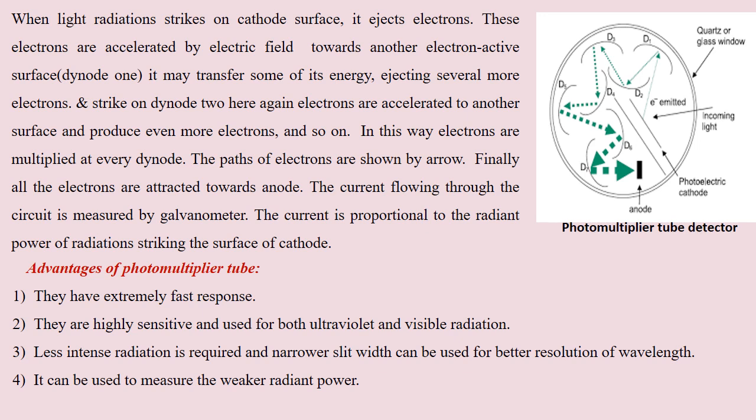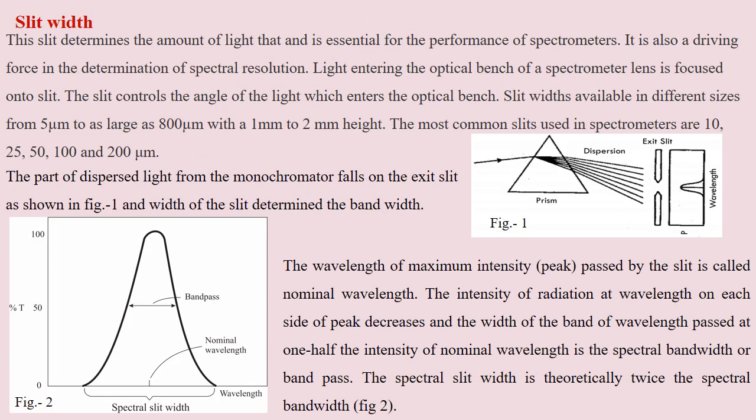The advantages of the photomultiplier tube detector over the phototube detector are: it gives a fast response, it is highly sensitive, and it can be used for both ultraviolet and visible radiation. Less intense radiations are required, a narrow slit width can be used for better resolution, and it can be used to measure weaker radiant power.